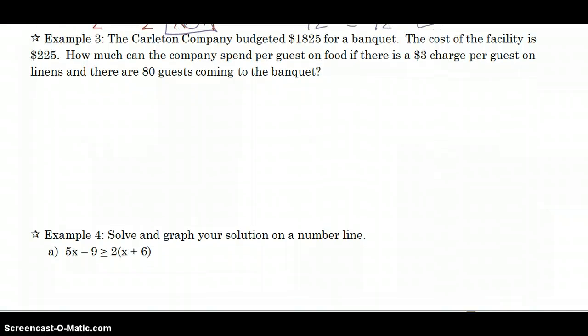All right. Here's a word problem. The Carlton Company budgeted $1825 for a banquet. I already know that if that's what they budgeted, whatever is going to take place over here needs to be less than or equal to $1825 because that's what they have in their budget. So let's read the rest of the problem. The cost of the facility is $225. So to rent the banquet hall, it's going to be $225. How much can the company spend per guest on food? Food is our question here.